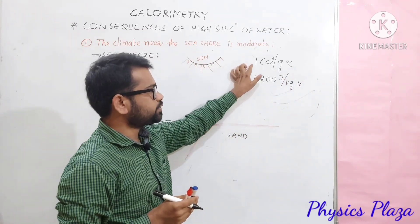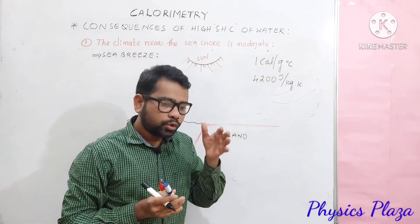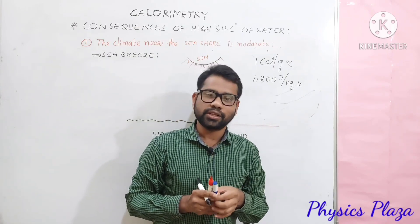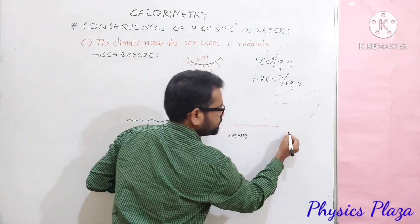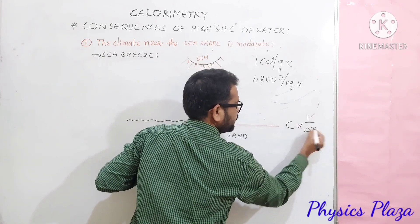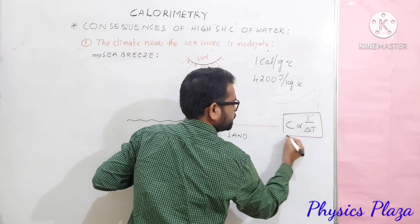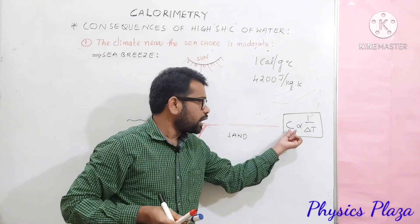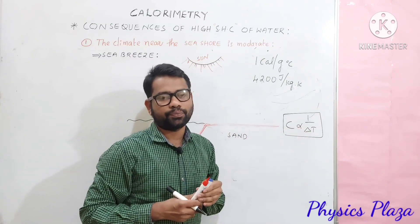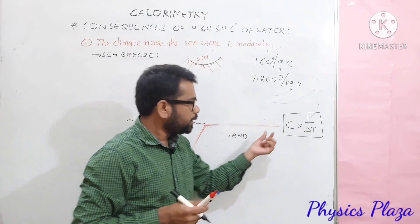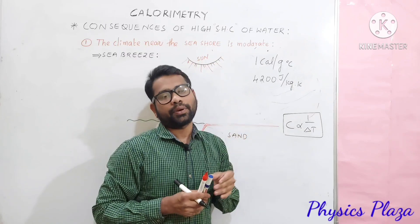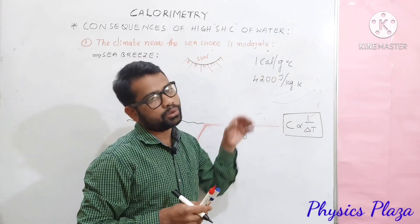This is the value of the specific heat capacity of water. How specific heat capacity of any material is related to the change in temperature is also very important. The specific heat capacity of any material is inversely proportional to delta T. This means the material with high specific heat capacity will show less rise in temperature or less fall in temperature, whereas the material with less specific heat capacity will show more rise in temperature or more fall in temperature.